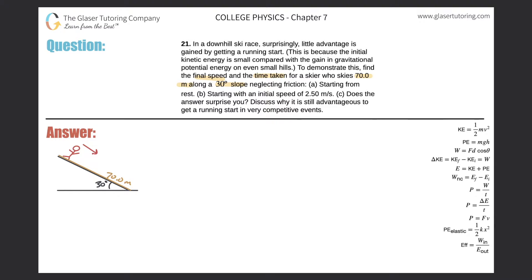Letter A is going to be starting from rest. So we have a little picture over here — going to ski 70 meters on a 30-degree slope, and in this particular case the velocity initially will be zero. There are a couple of ways we can approach this problem, but let's approach it from an energy perspective. Since there's no friction — it says neglecting friction — remember that the initial energies will be equal to the final energies.